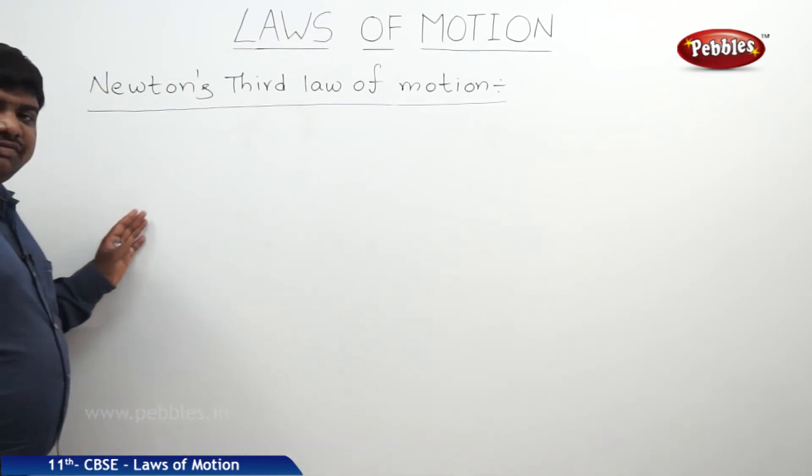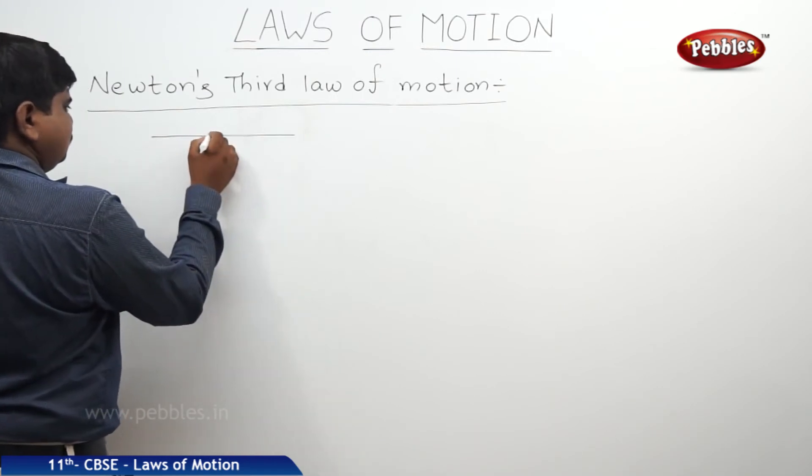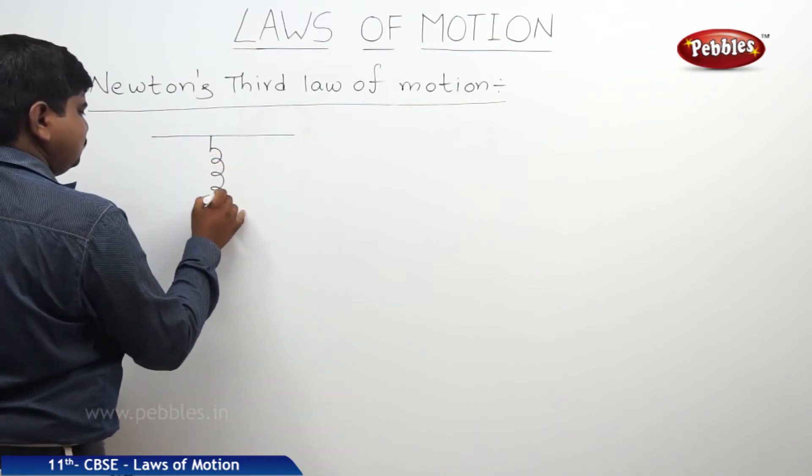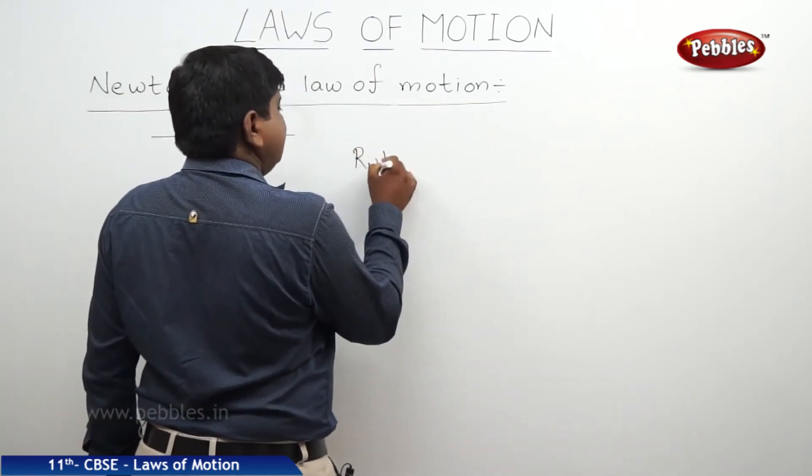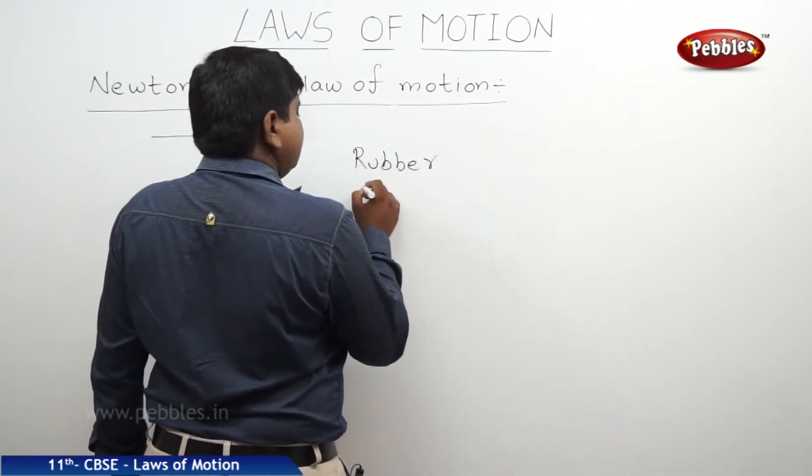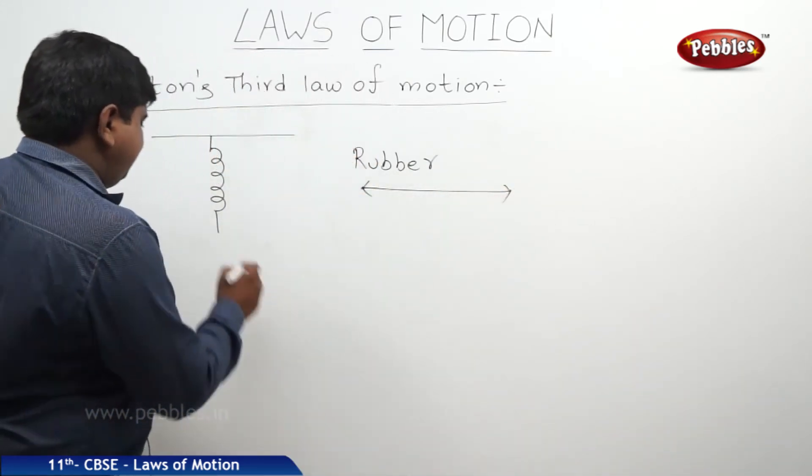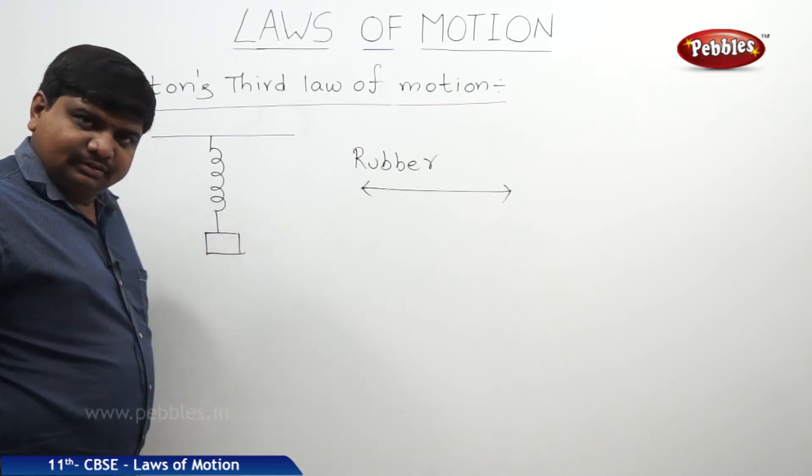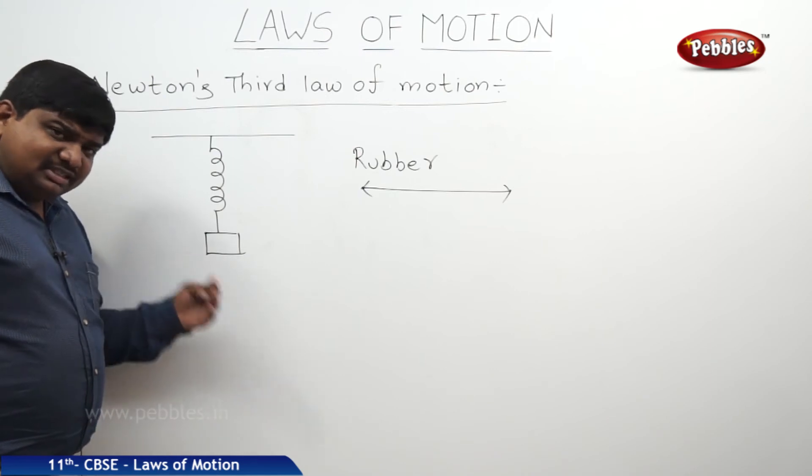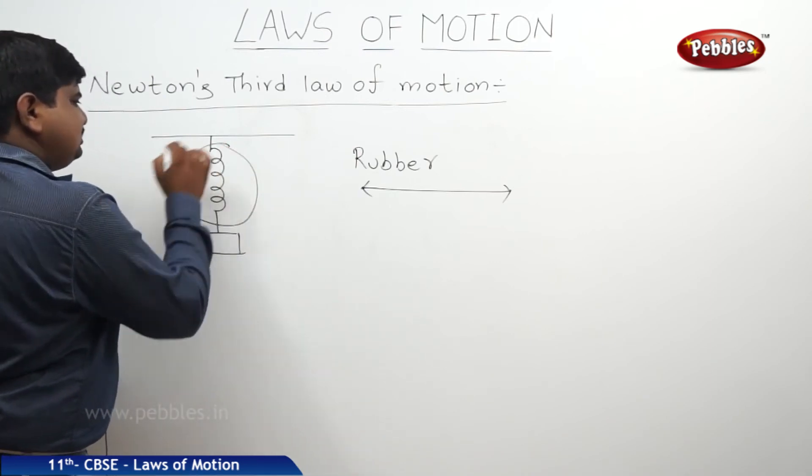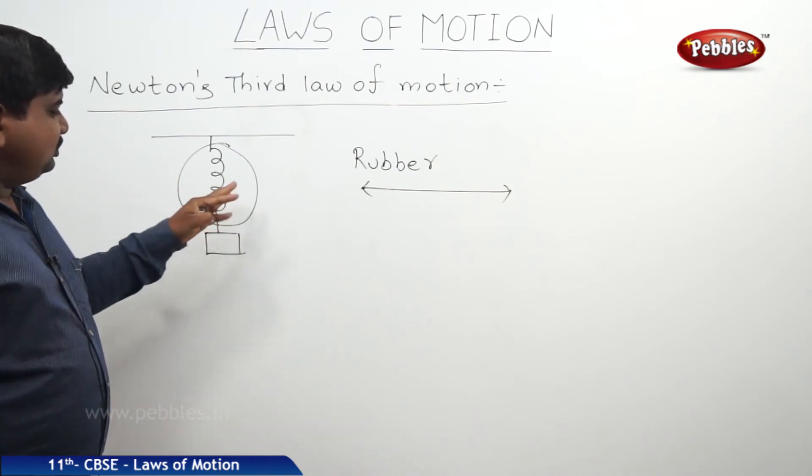And another consequence of this Newton's third law of motion is elasticity. The elasticity is also one of the example of the Newton's third law of motion. Suppose if we take any spring or any elastic material like a rubber thread, once it is stretched by applying any force or weight on it, that means in one direction we are applying the force. But in the opposite direction within the body there are some forces are created to regain the original position of the body.